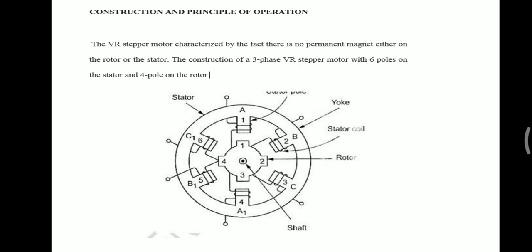The stator is made up of silicon steel stampings with inward projected even or odd numbers of poles or teeth. Each stator pole carries a field coil or excitation coil. In case of even number of poles, the excitation coils of opposite poles are connected in series such that their MMF gets added. The combination of the two coils is called phase winding.